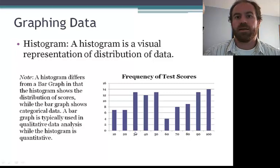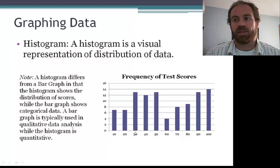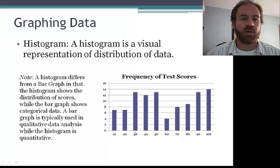Histograms look like bar graphs, but show the distribution of scores within a set. In this example, we're looking at the distribution of test scores in a set of 100 scores. And we can see that the scores have been organized into intervals of 10. So 0 to 10, 11 to 20, 21 to 30, and so on.